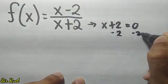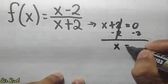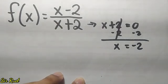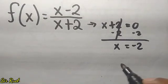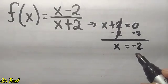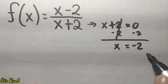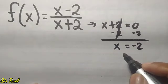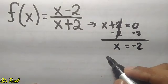We just subtract 2 from both sides. So 0 minus 2 is negative 2, meaning the value of x is negative 2. Therefore, the domain is all values the variable x can take except negative 2, because when x is negative 2, the denominator becomes 0 and the function f of x will be undefined.